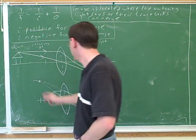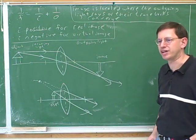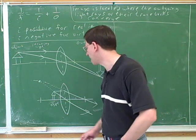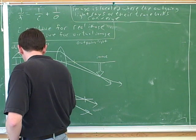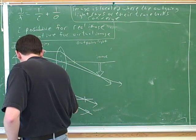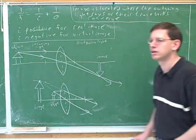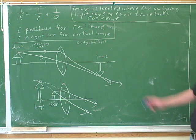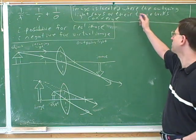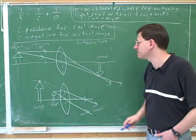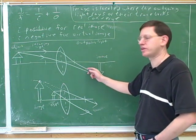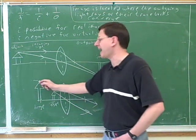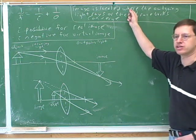If we trace the rays back, their tracebacks will converge over here. That gives us our traceback, and that's where the image is. So now we see more clearly what it means: draw the outgoing light rays, and if they're getting closer to each other, where they converge is the image. If they're getting further from each other, trace them back and the traceback will converge — that's the full definition of where the image is.